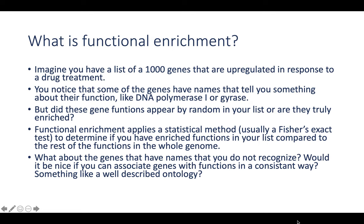We talked about looking at gene names and inferring function from those names, but it would be wonderful if every gene had a name that is consistent and tells you something about function — but that's not the case, unfortunately. So it would be great if there's a way to associate genes with functions in a consistent way, using functions that are well described and used universally by everybody. This is where ontologies come into play.